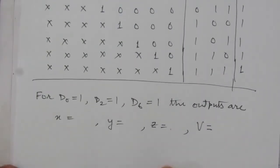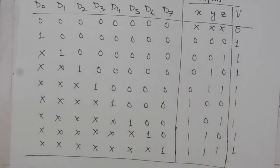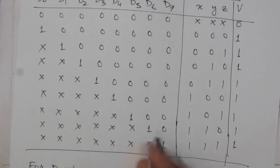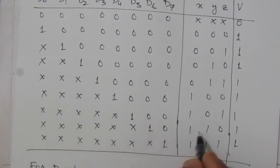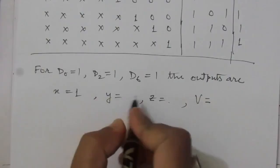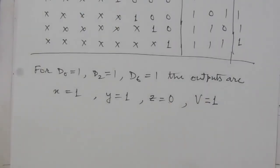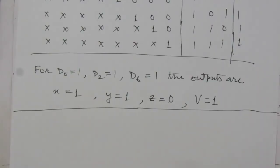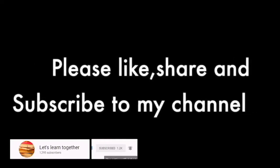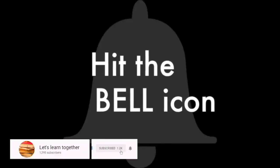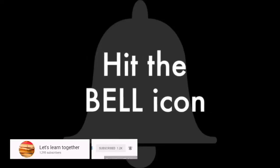We need to find x, y, z, and V. Looking at the truth table, since d6 has the highest subscript among the active inputs, it has the highest priority. We find the row where d6 equals one, and the output values are x equals one, y equals one, z equals zero, and V equals one. Thank you for watching. If you have any questions please put them in the comment section below, and please like, share, and subscribe to my channel.